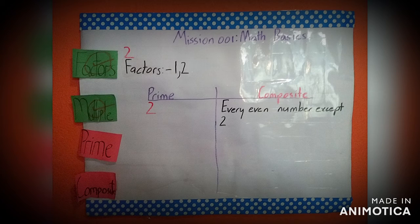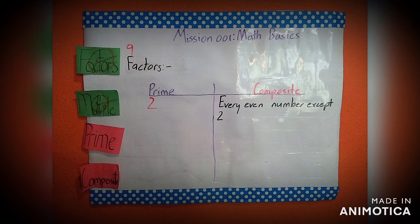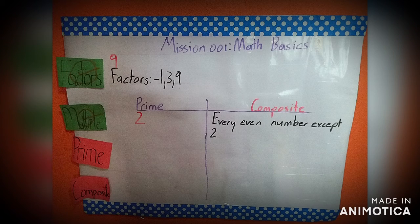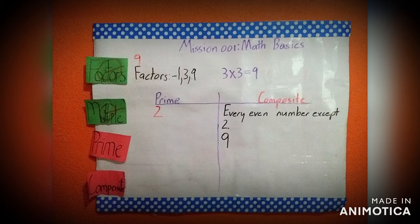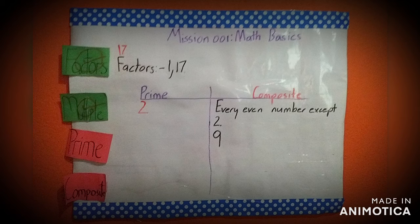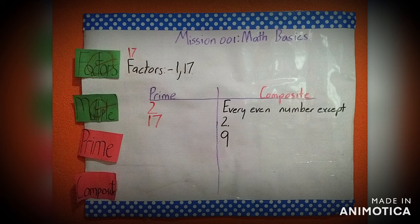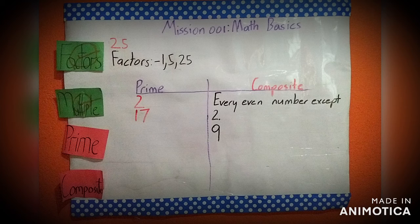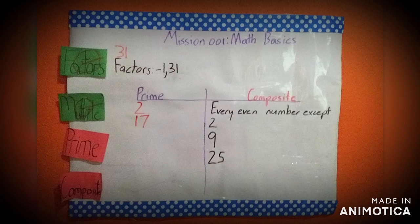So every even number except 2 is composite. Now we just have to test some odd numbers by checking their number of factors. Let's test 9: the factors of 9 are 1, 3, and 9, so 9 is a composite number. Note that although 3 multiplies by itself to give 9, we only write 3 once on the factor line. Then we have 25: its factors are 1, 5, and 25, so it is a composite number. And lastly, 31: its factors are 1 and 31, so 31 is a prime number.